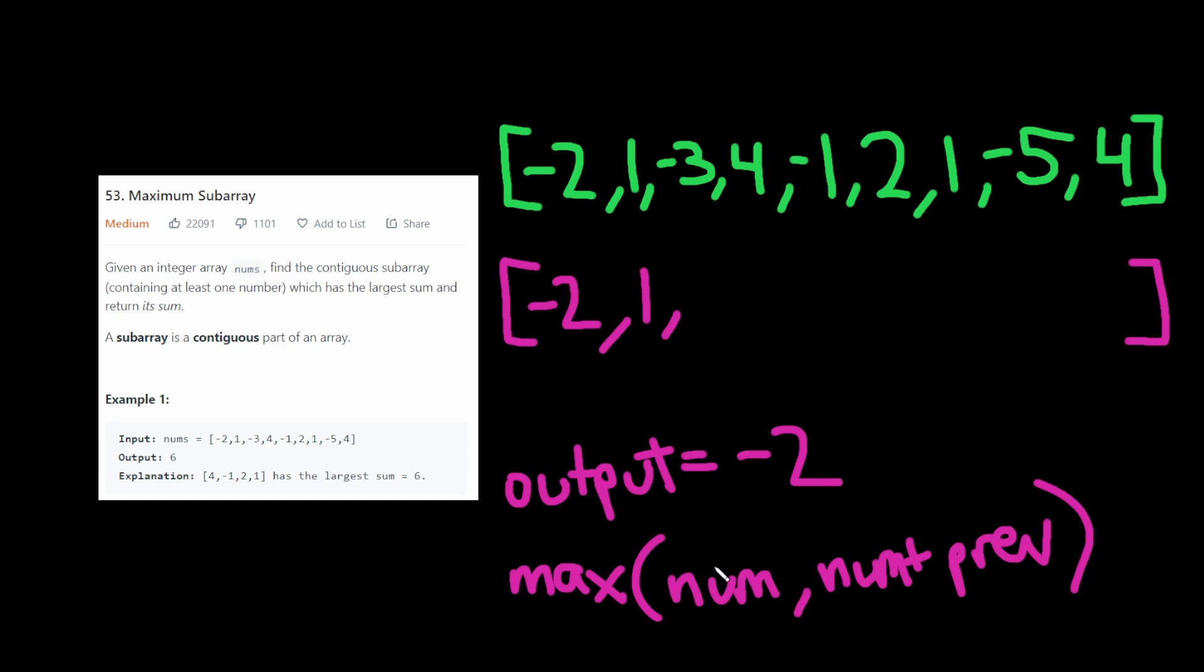And after we compute this we also check if the current number in our data structure is bigger than the output and if so we change output to be that current number. So now we get to the negative 3 and we run this algorithm and we see okay negative 3 plus 1 is bigger than negative 3. Now we put negative 2 here.